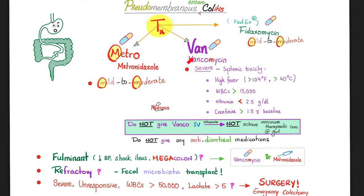Can you define severity? Yes: very high fever, high leukocytosis, low albumin, high creatinine. My patient has diarrhea because of C. diff colitis — should I give anti-diarrheal medications? No. This will not clear the bacteria and will not get rid of the toxins.